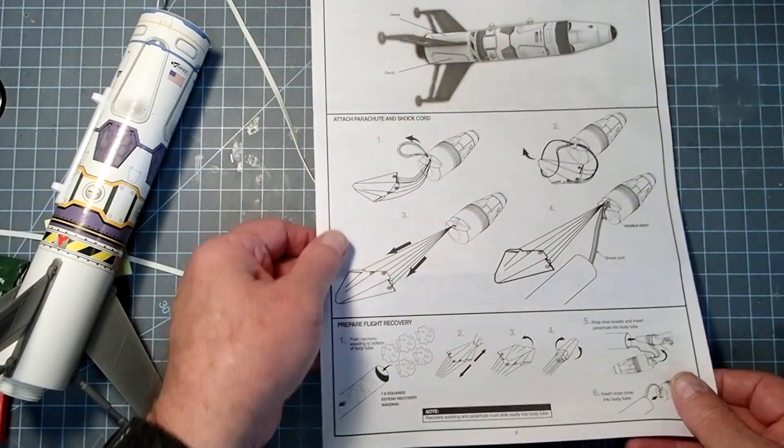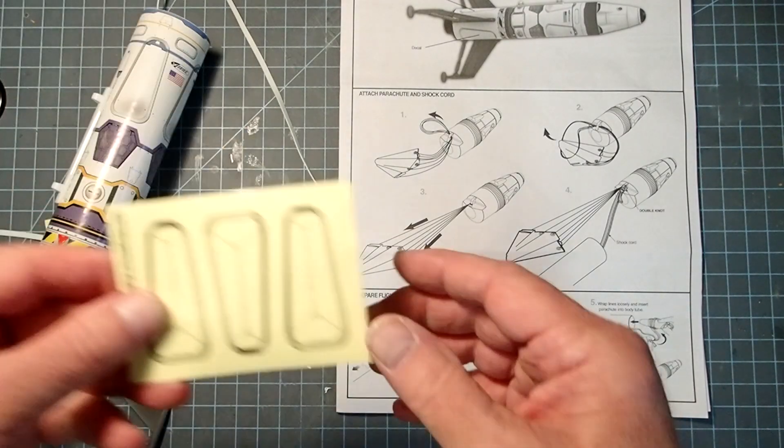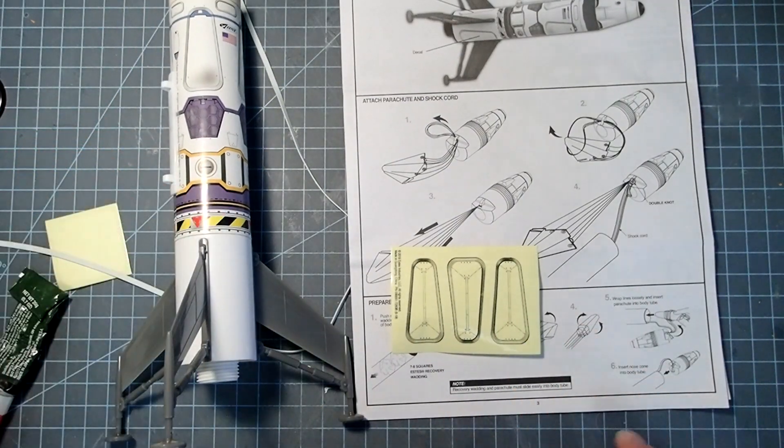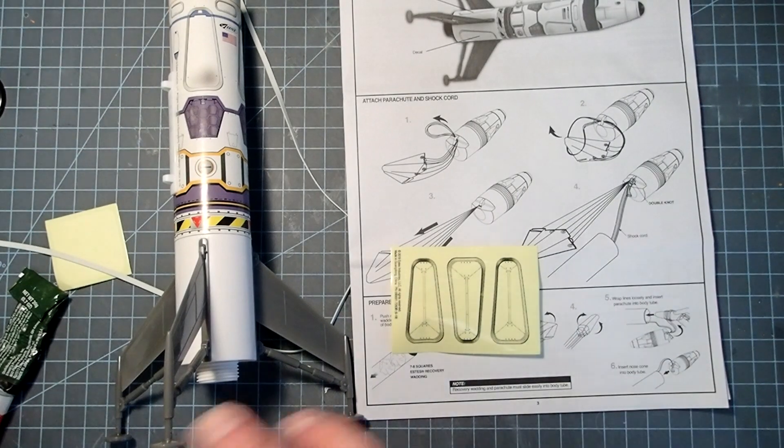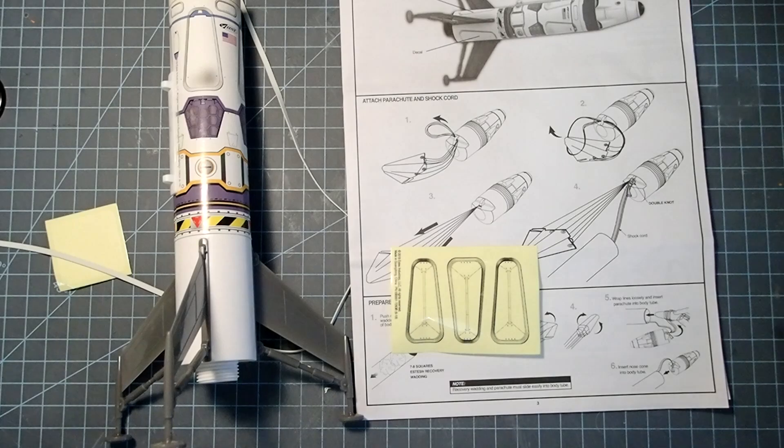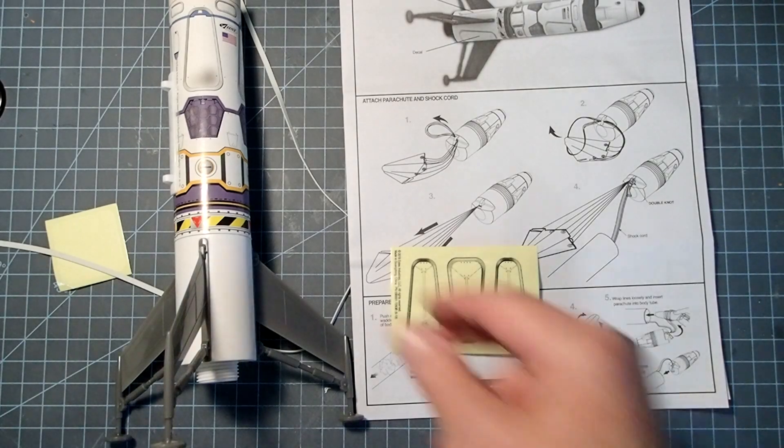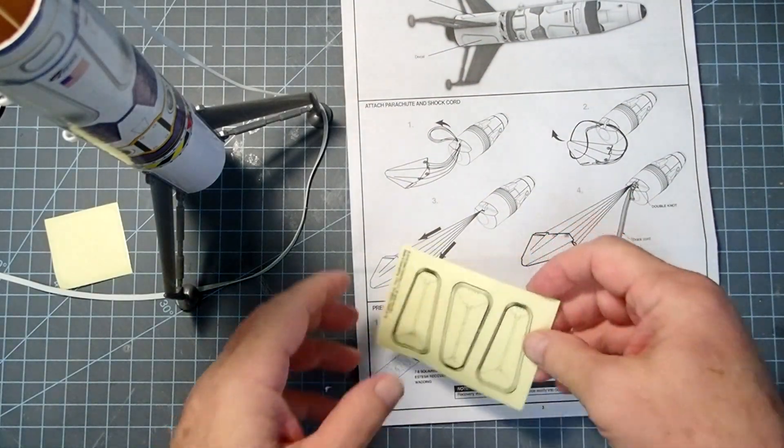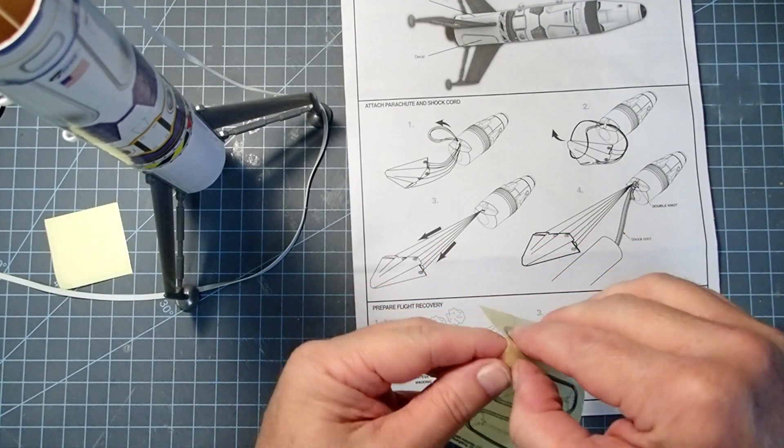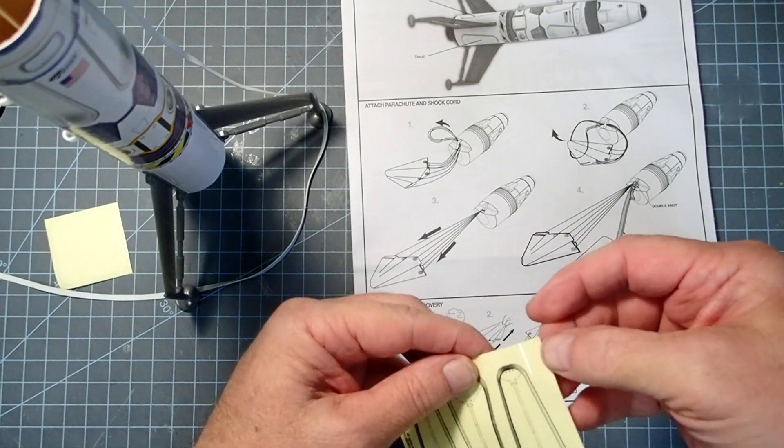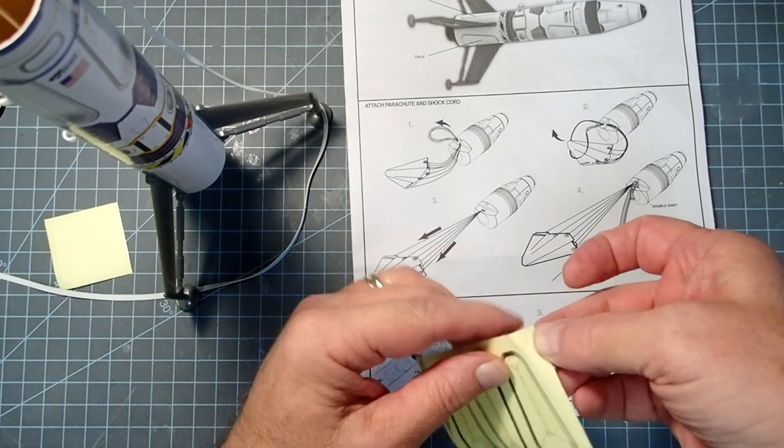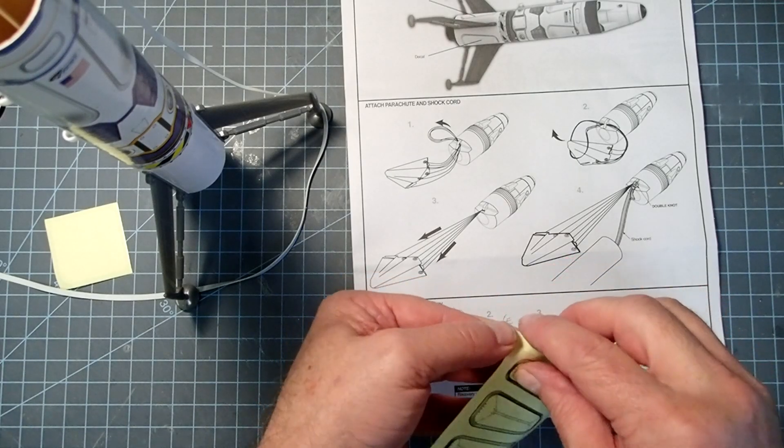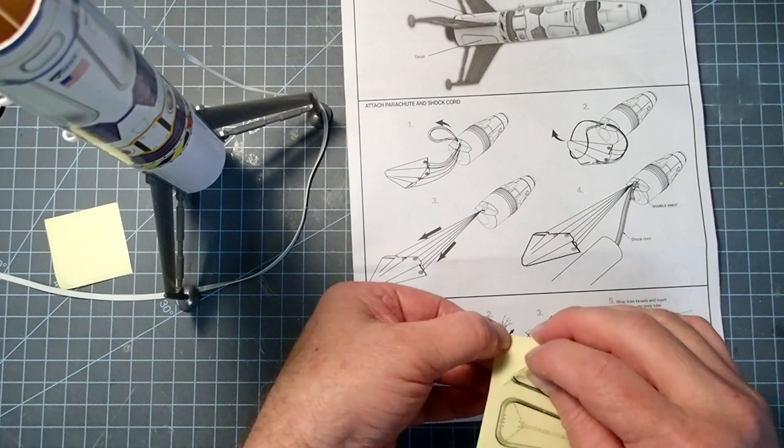Alright, then moving on here, we've got some self-adhesive decals. These are going to go in between the fins. Now, I recommend before you do those that you thoroughly wash your hands so you don't have as many fingerprints on the underside of them. So I'm going to go do that really quickly here and then come back. Okay, now that I have clean hands, I'm going to peel these up. And the idea is you want to hold them as much by the edges as you can. So you minimize fingerprints that are going to happen anyway.